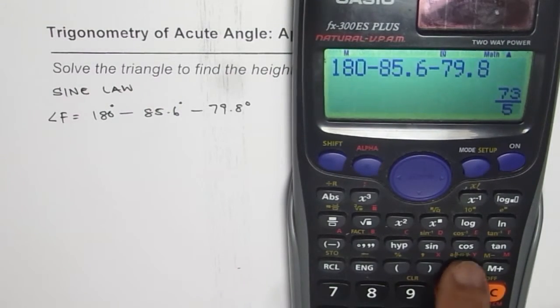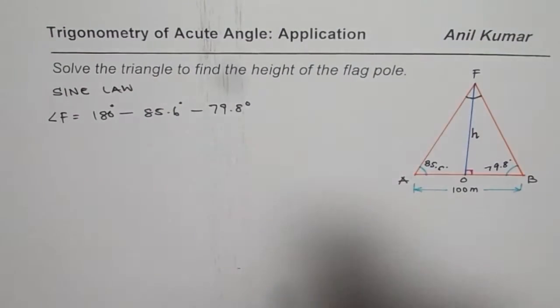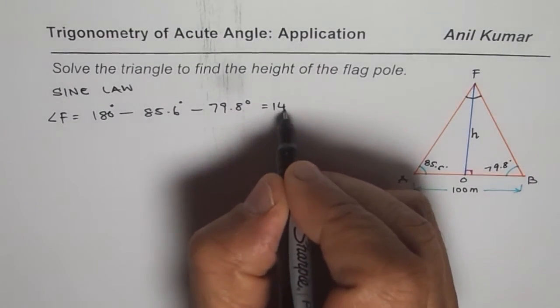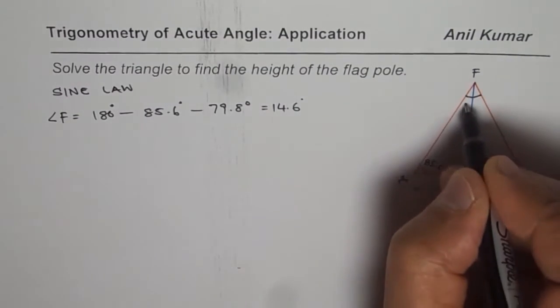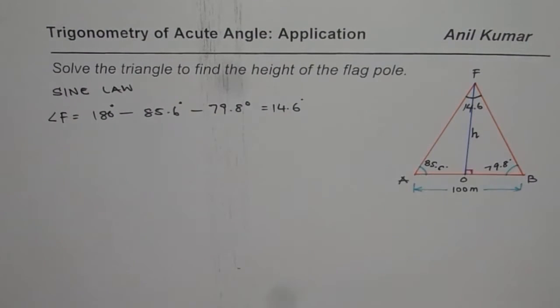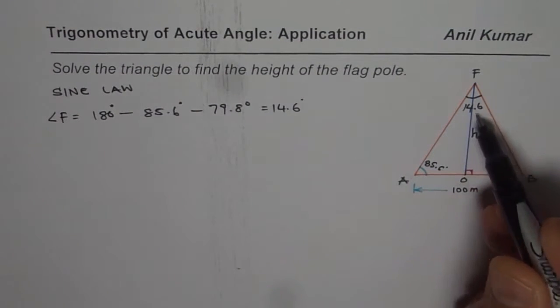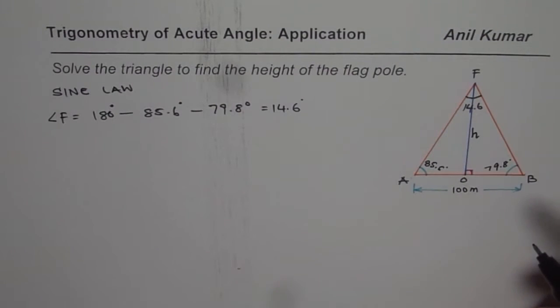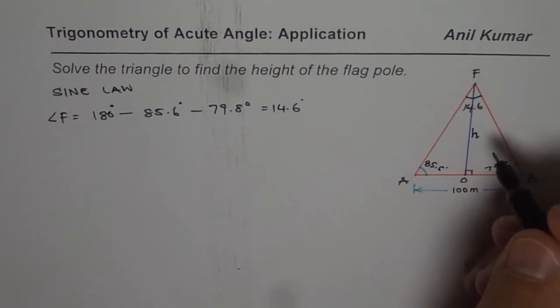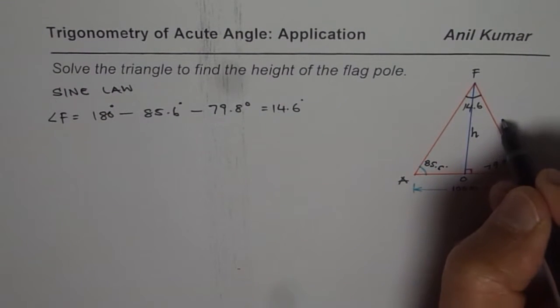And that equals 14.6 degrees. So this is 14.6 degrees. Since we know one ratio we can actually find all the sides. Let's find side F B.